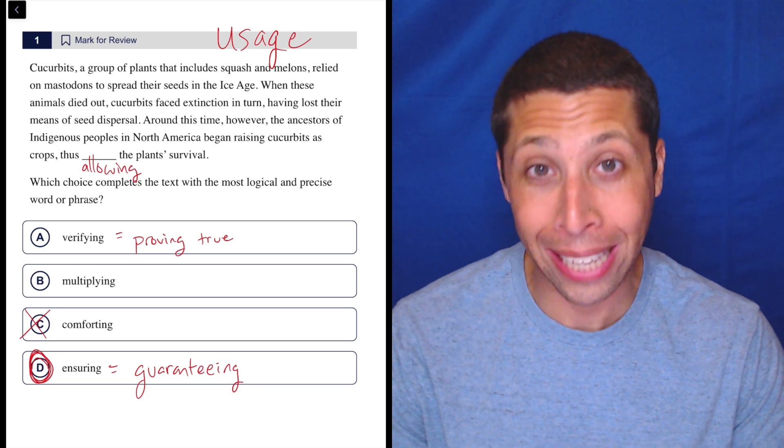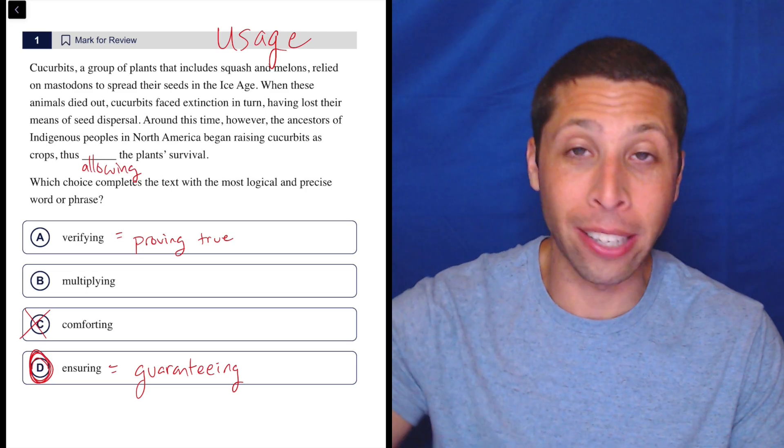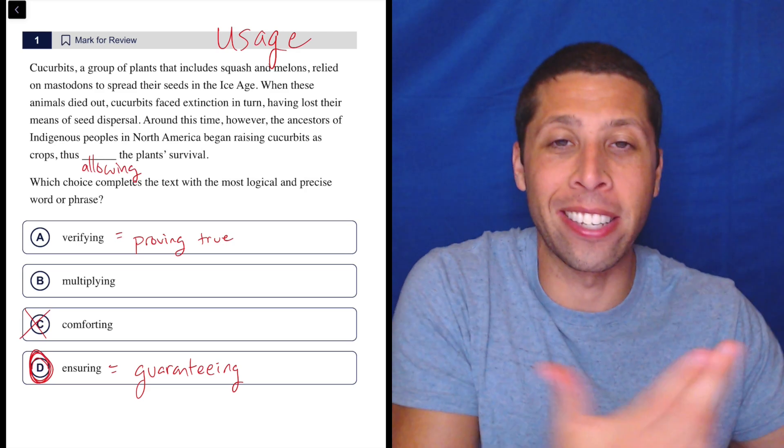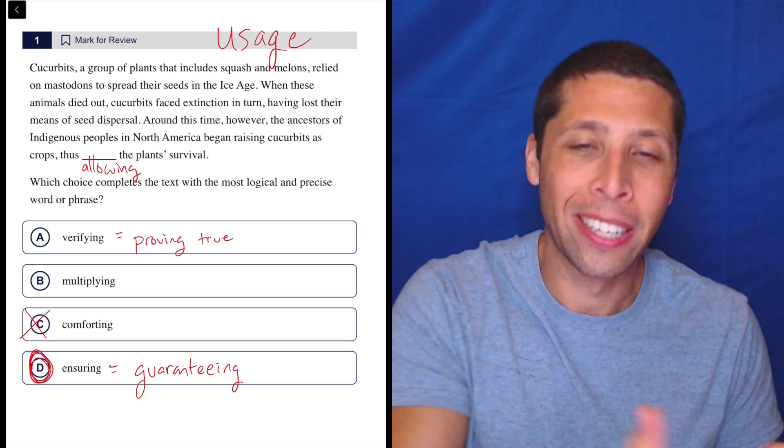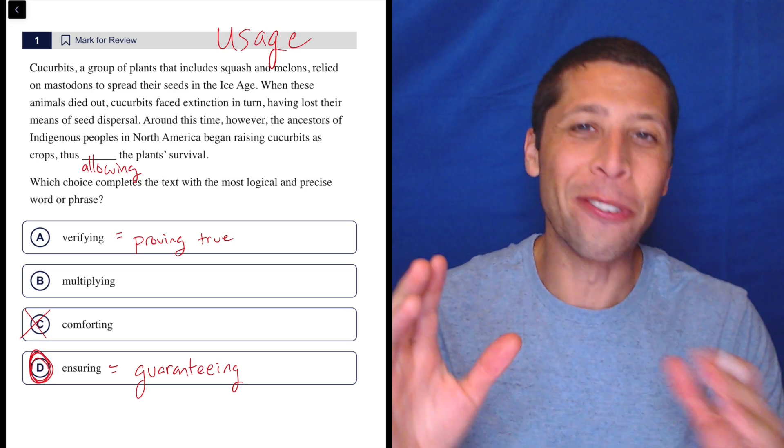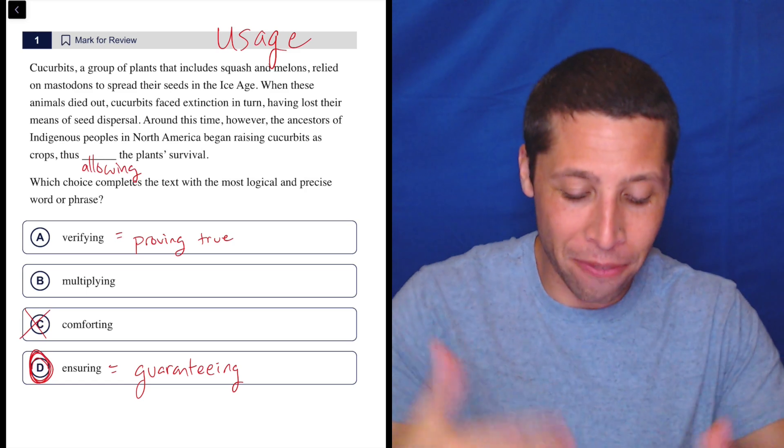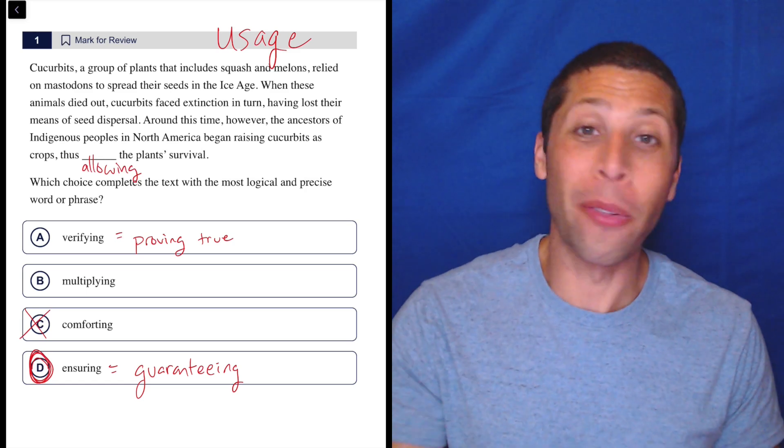You can verify that a plant survived by going out in whatever area and looking for some cucurbits, but you can't verify its existence by, or you can't verify its survival. I'm messing up the words here. You can verify its survival by going out and checking if it still exists, but we're not verifying its survival by allowing it to continue to grow. So there you go.